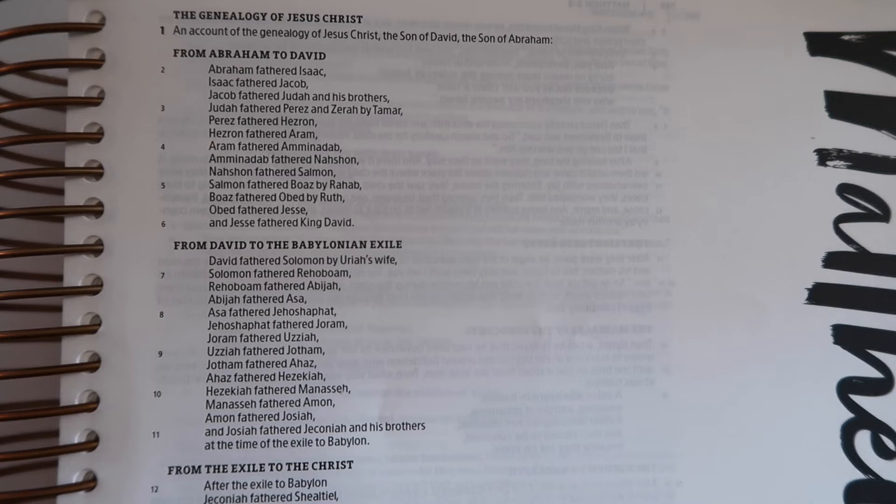We're going to start in Matthew chapter one and it starts off with the genealogy of Jesus. We don't know who exactly the author of Matthew is, we're assuming it's Matthew mainly because Matthew was very smart, he knew a lot about numbers - he was a tax collector - and Matthew talks more about numbers than any other book in the Bible.